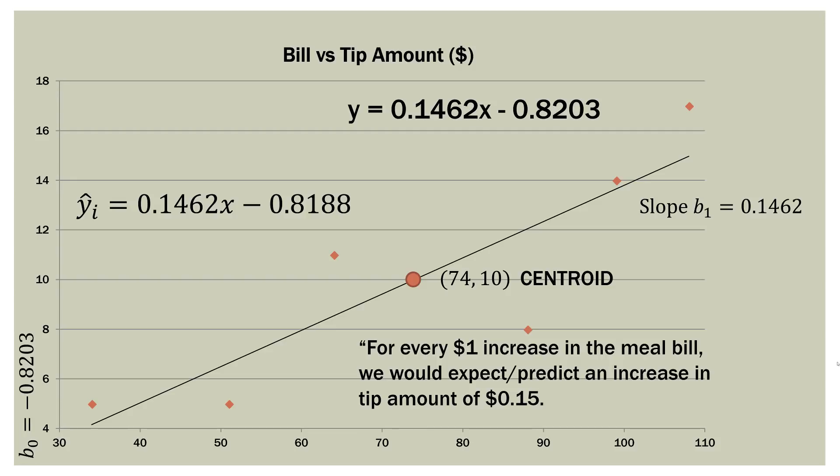And what that means is that for every $1 increase in the meal bill, we would expect or predict an increase in the tip amount of about 15 cents. So you can see our slope there of 0.1462. That means for every dollar the bill goes up, we expect an increase of technically 14.62 cents in the tip, but we kind of round up to 15 cents.